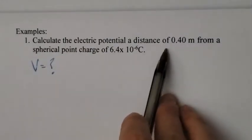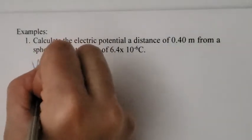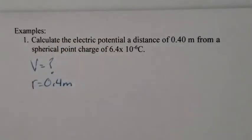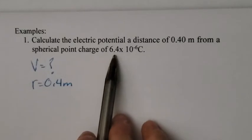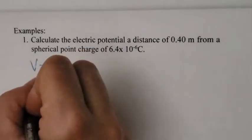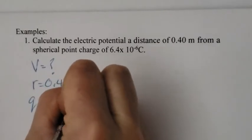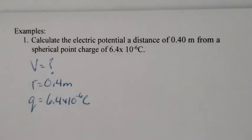We know what the distance R is. So R is equal to 0.4 meters. And the charge is 6.4 times 10 to the negative 6, that's measured in coulombs.